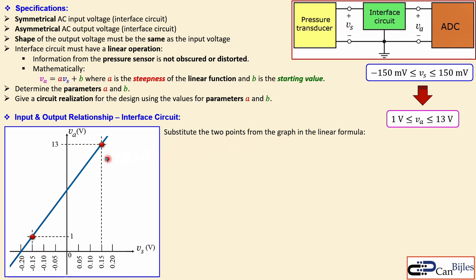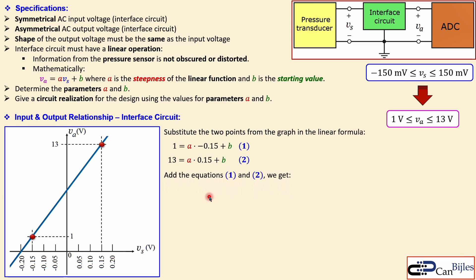We substitute the two points — which are (minus 0.15, 1) and (0.15, 13) — into the formula, giving two equations and two unknowns to solve. Equation 1: 1 = A·(−0.15) + B, and Equation 2: 13 = A·(0.15) + B. I see that the coefficients of A are reversed in sign, so we can add them up — that's the fastest and easiest method. Adding the two equations: 1 + 13 = 14 equals 2B, so B = 7.